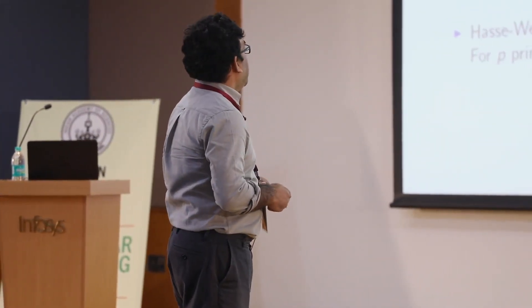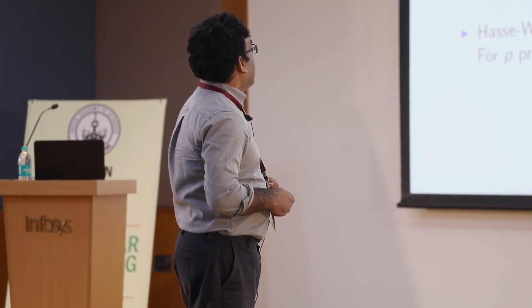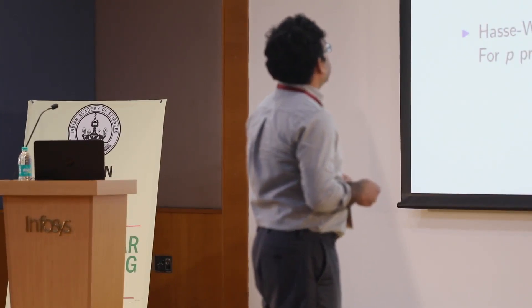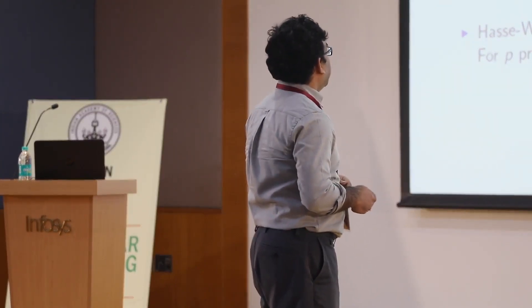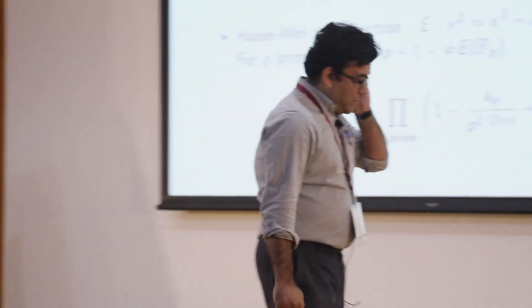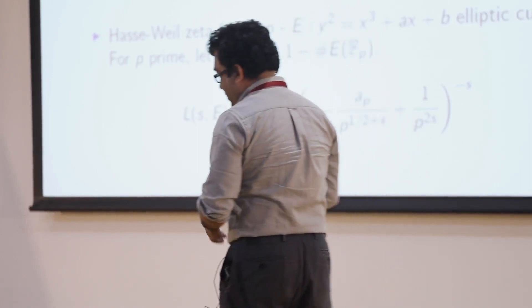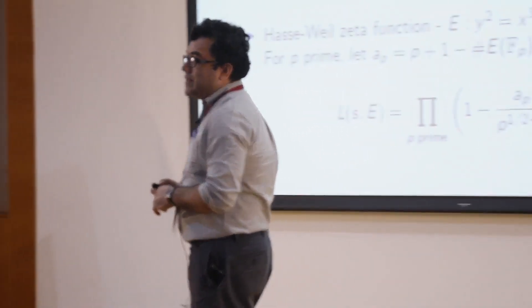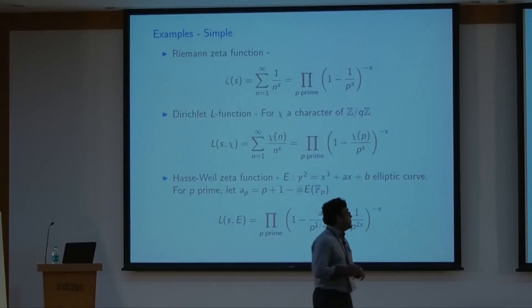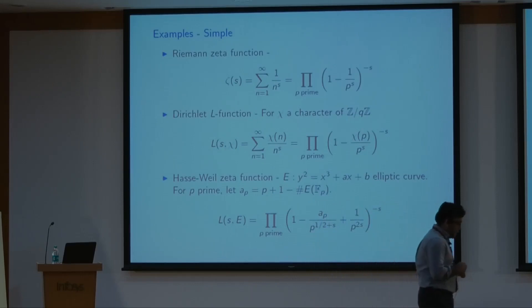The zeta function has an Euler product: it can also be written as a product over all primes of (1 - 1/p^s)^{-1}. This equation is essentially just the fundamental theorem of arithmetic, which says that every integer can be written uniquely as a product of prime powers.